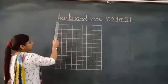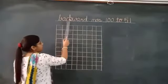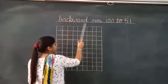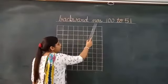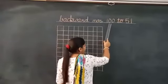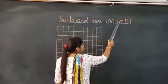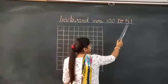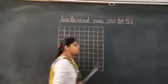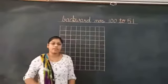Backward. B, A, C, K, W, A, R, D — backward numbers 100 to 51. Ok children.